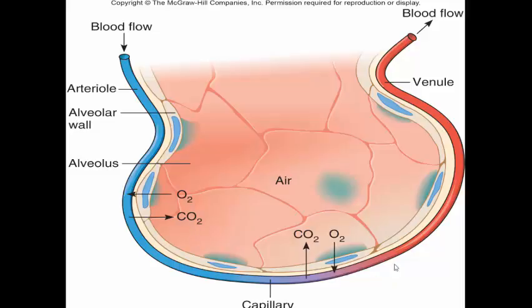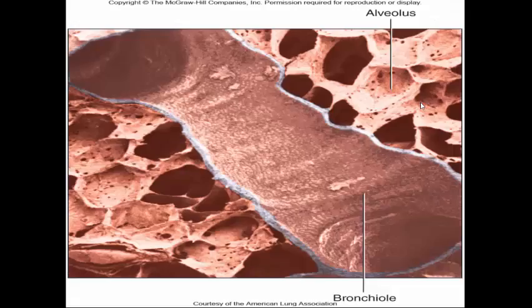Once oxygenated, the blood — now shown as red — goes back to the left side of the heart, into the left atrium, down to the left ventricle, and is pumped through the aorta. Each individual space in the close-up image resembles a honeycomb — that is the alveolus, surrounded by a very thin bronchiole.